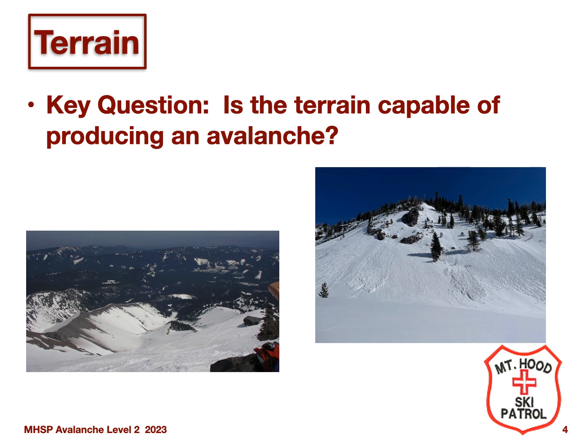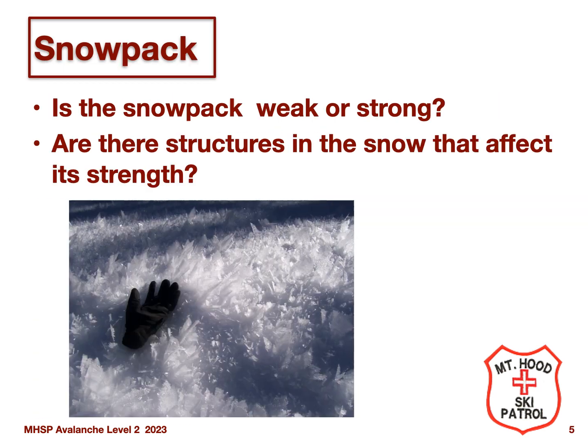Let's start with the factor we can control: terrain. The key question in any terrain is, is the terrain capable of producing an avalanche? This includes the terrain we are on, as well as the terrain above us.